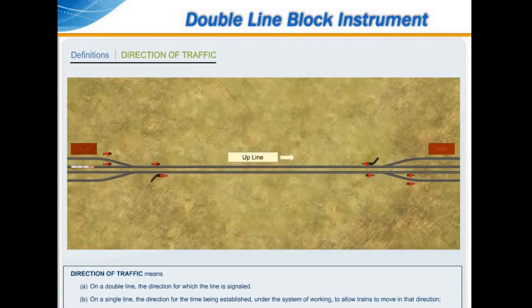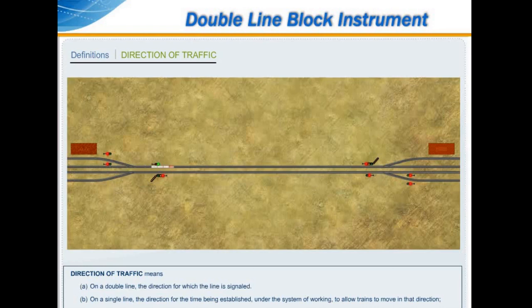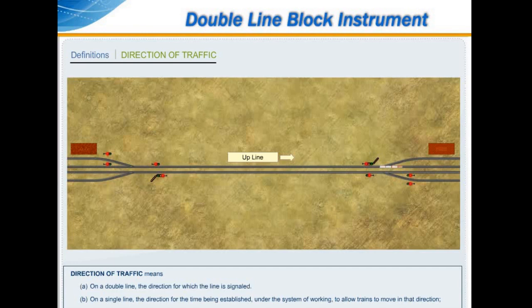Direction means: on a double line, the direction for which the line is signalled; and on a single line, the direction for the time being established under the system of working to allow trains to move in that direction.